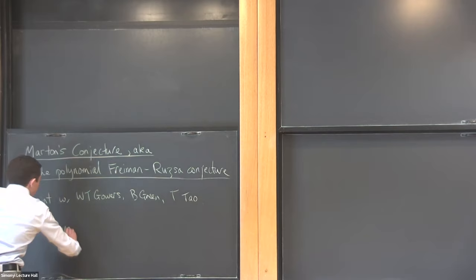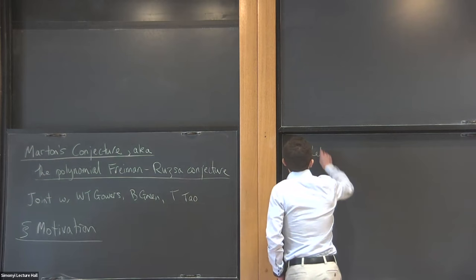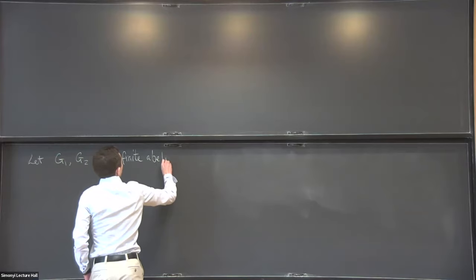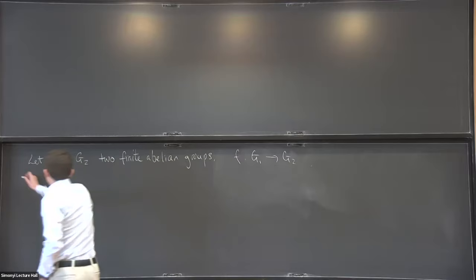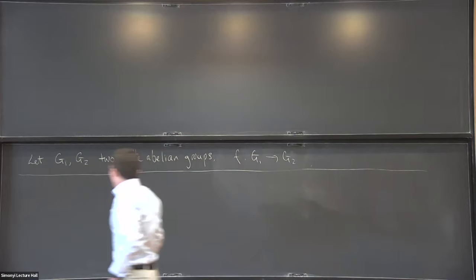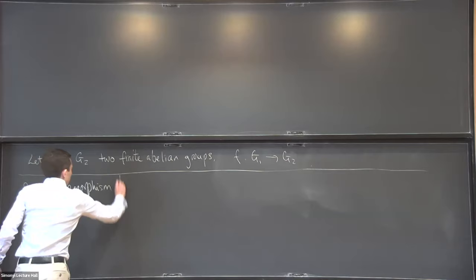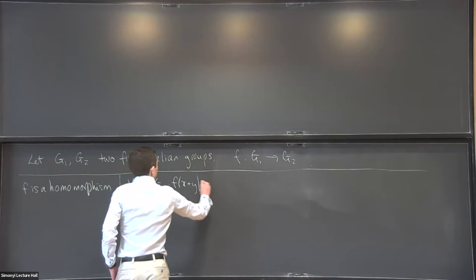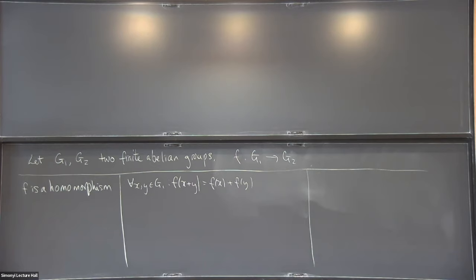Let me give some motivation. I want to talk about approximate homomorphisms. Let's take G1 and G2, two finite abelian groups, and take some function f from G1 to G2. Firstly, I can say what it means for f to be a homomorphism — not controversial — and that's just saying that for all x, y in G1, f of x plus y equals f of x plus f of y.